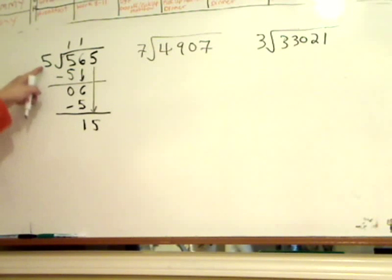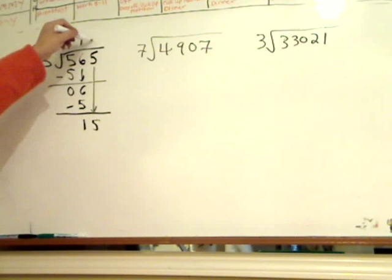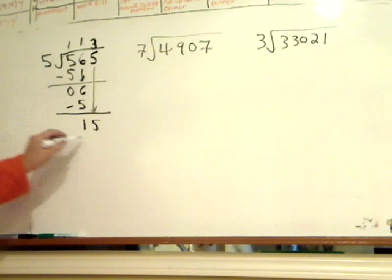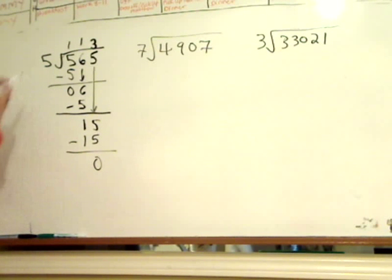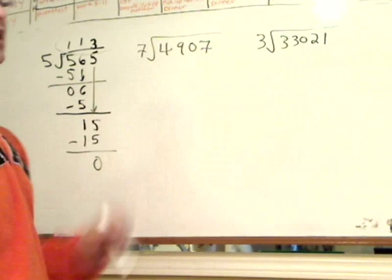Bring down the 5. And then 5 go to 15. How many times? 3. 3 times 5 is 15. Subtract, the difference is 0. So the answer is 5 go to 565, 113. Okay, let's try the second one.